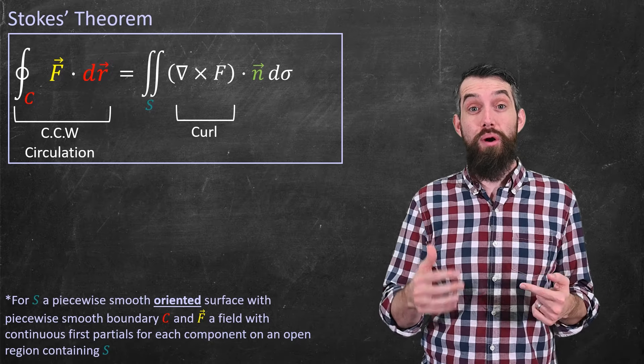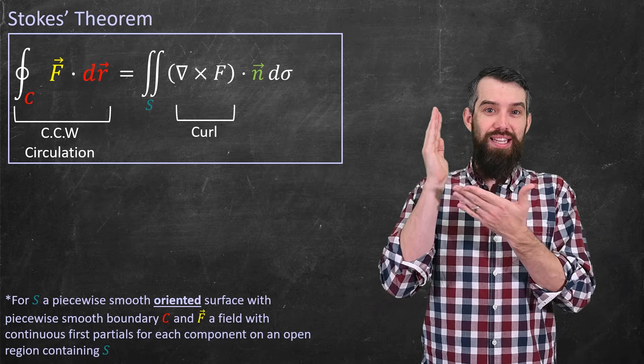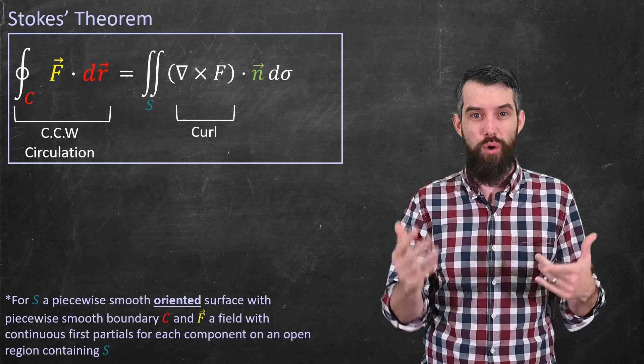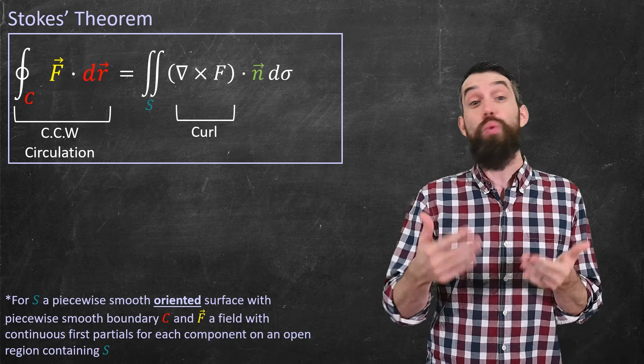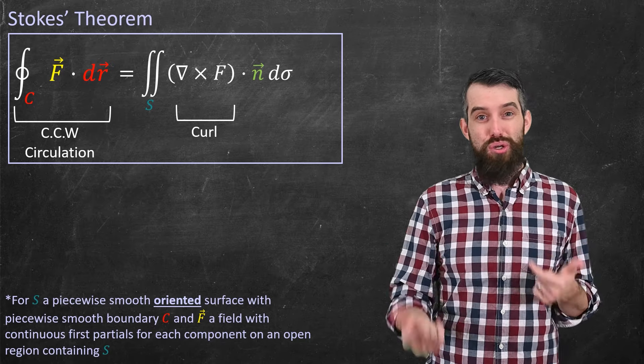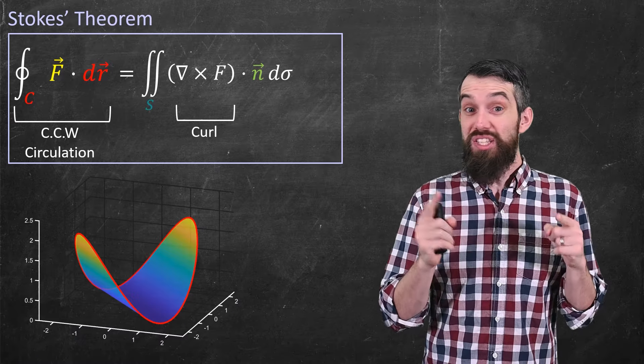We'd seen previously an oriented surface, but the surface really had two different sides, and you could choose a consistent or continuous choice of normals. We need to have a choice of normals to be able to compute the right-hand side of Stokes' Theorem. And so Stokes' Theorem really does depend on it being an oriented surface. So that is Stokes' Theorem.